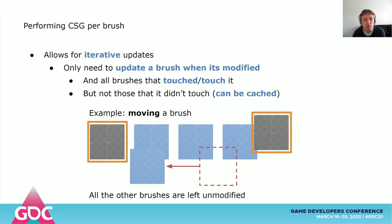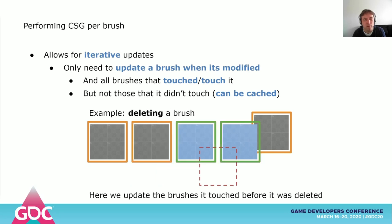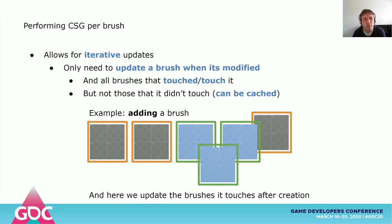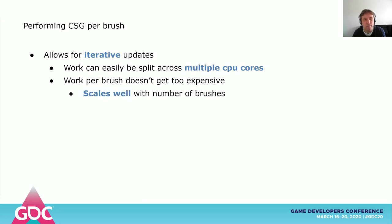Another example: if you delete a brush, you only need to update the brushes it touched before it was deleted. And when you add a brush, you determine which brushes it touches and update those together with the new brush. All of this essentially turns brushes into a unit of computation, and we can easily split the work across multiple CPU cores. The work per brush never gets too expensive and everything scales well with the number of brushes.